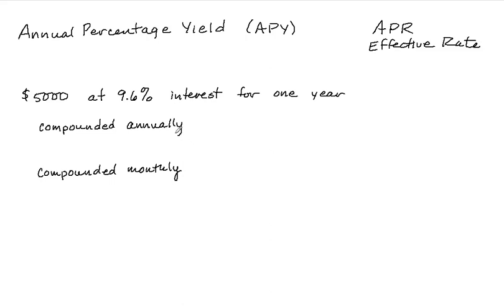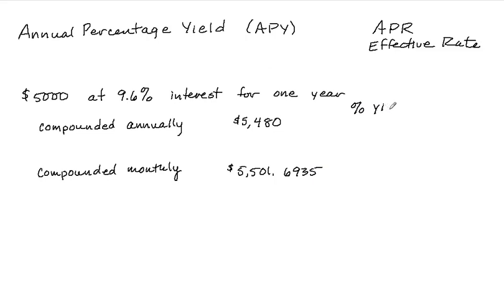In the previous sections we've seen that the compound effect is significant. Take $5,000 at 9.6% for one year. If compounded annually, the future value is $5,480. If compounded monthly, the future value is $5,501.6935. To find the percent yield, take the ending amount — $5,480 — divided by the beginning amount — $5,000 — which gives 1.096, meaning 9.6% interest was earned.